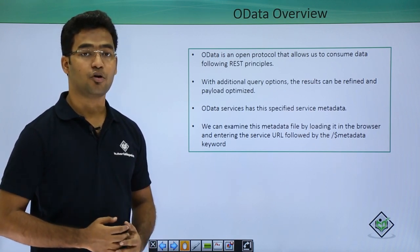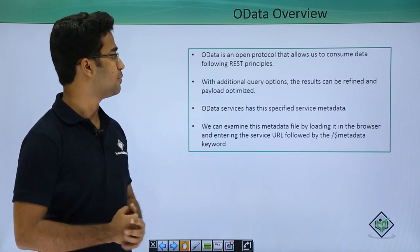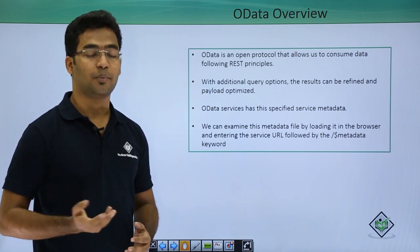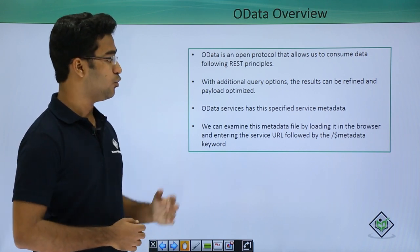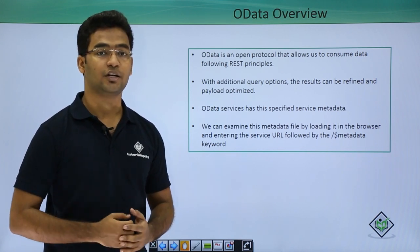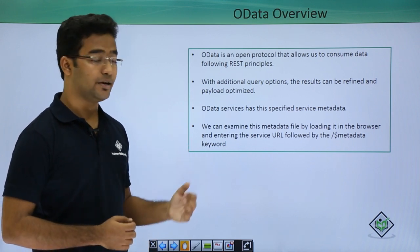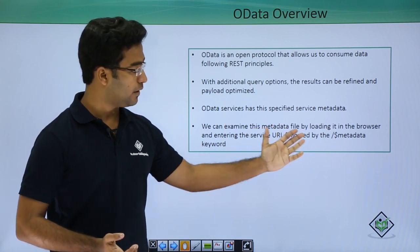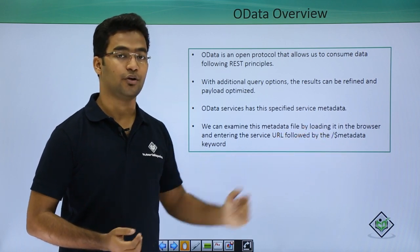What is OData? OData is an open protocol which is used to consume data from the backend using REST principles. It allows us to provide additional query options like top, skip, and others which enhance our experience using the OData service. OData has a specified metadata file used to display our connection to the backend, and you can view the metadata using the OData URL followed by dollar metadata.